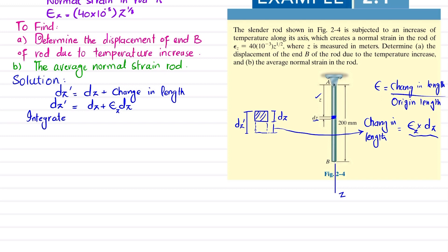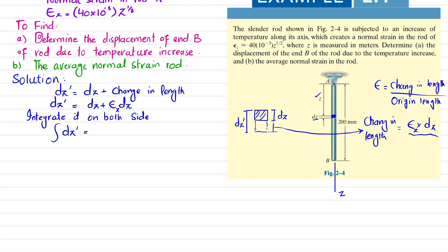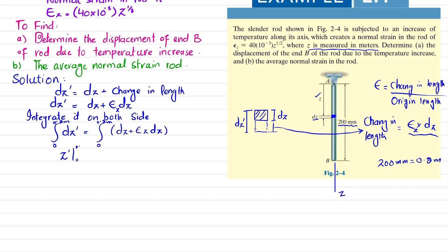Since this is a rod and dz is a small differential element, to find the total change in length we integrate both sides. Integrating dz_dash gives us the total new length. The limits are 0 to 200 mm, which equals 0.2 m, since z is measured in meters. We integrate only the right side to find the total increase in length.